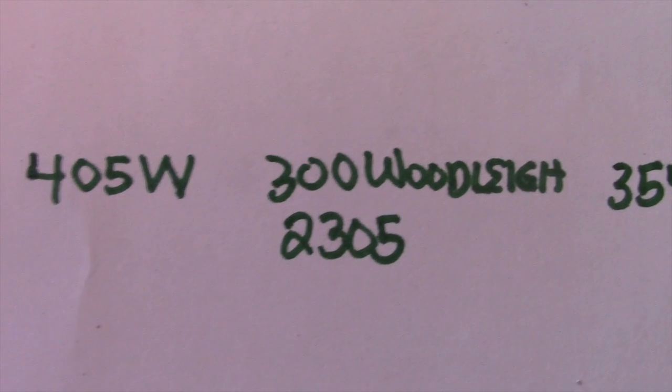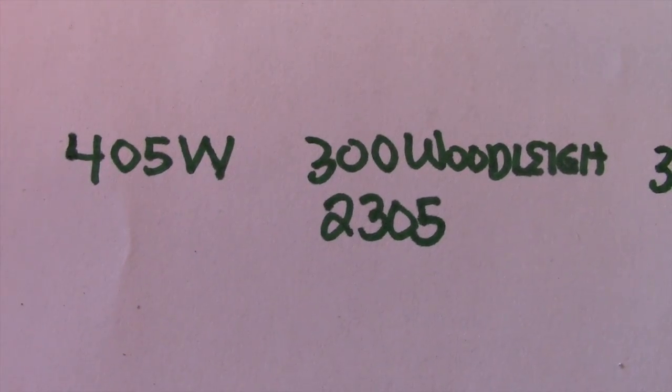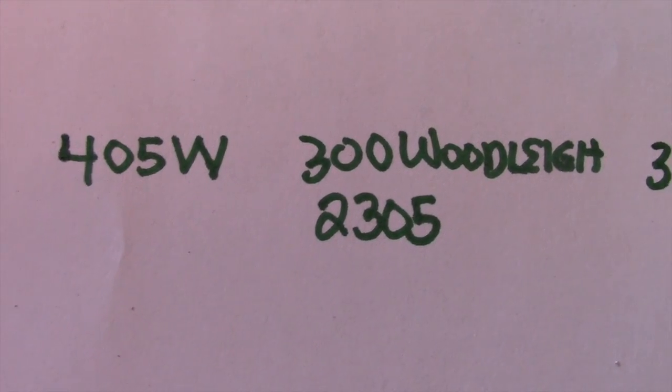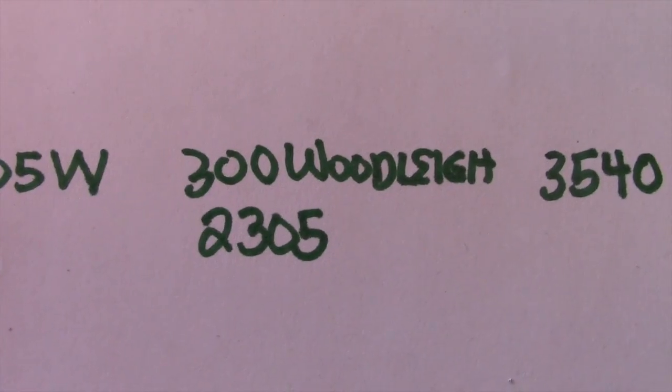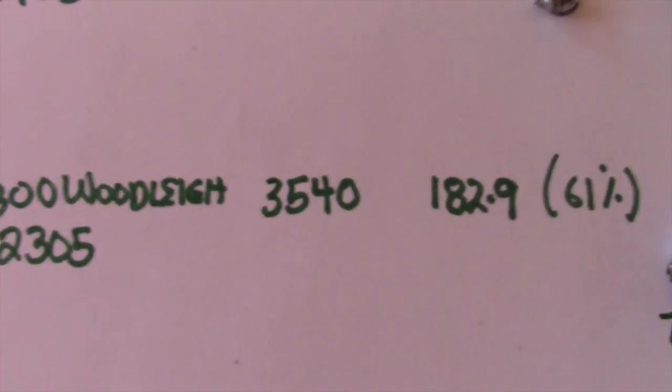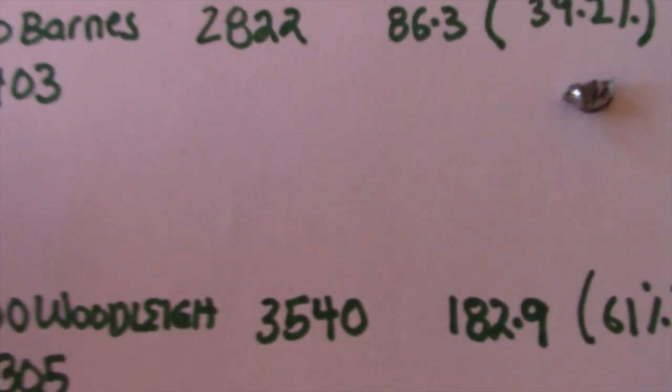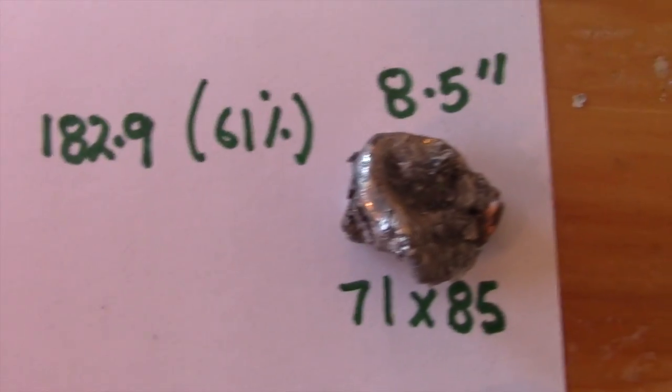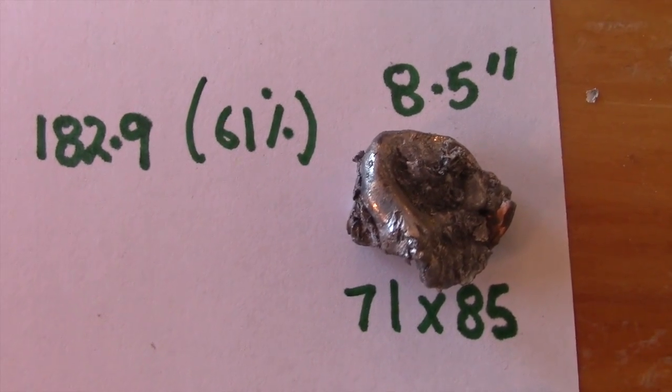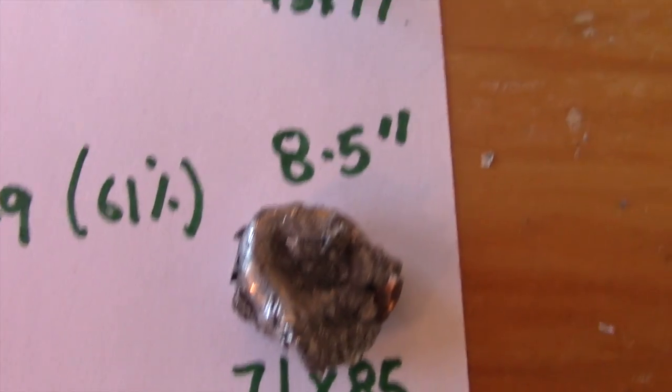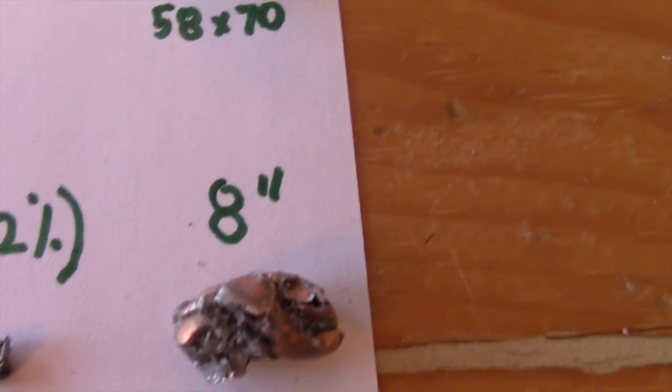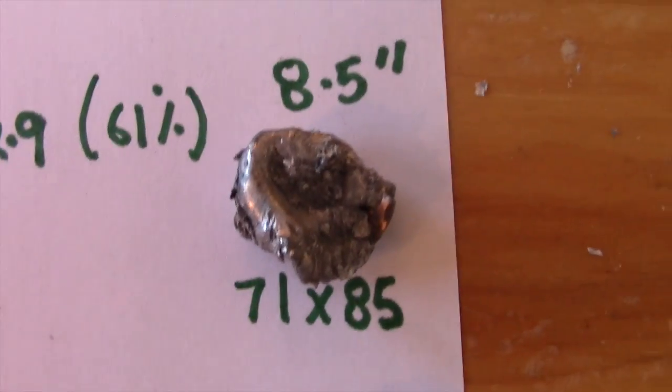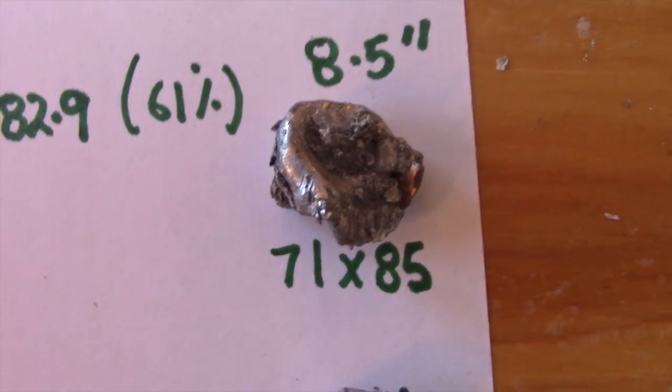The .405 Winchester is the second best penetration with the 300 Woodleighs at 2305. That gave me 3540 foot-pounds. Which is up there. It had a retained weight of 182.9 grains, or 61%. And it went 8.5 inches. So not a whole lot more, but a little bit more. And it expanded to 71 by 85. So that's also our widest mushroom.